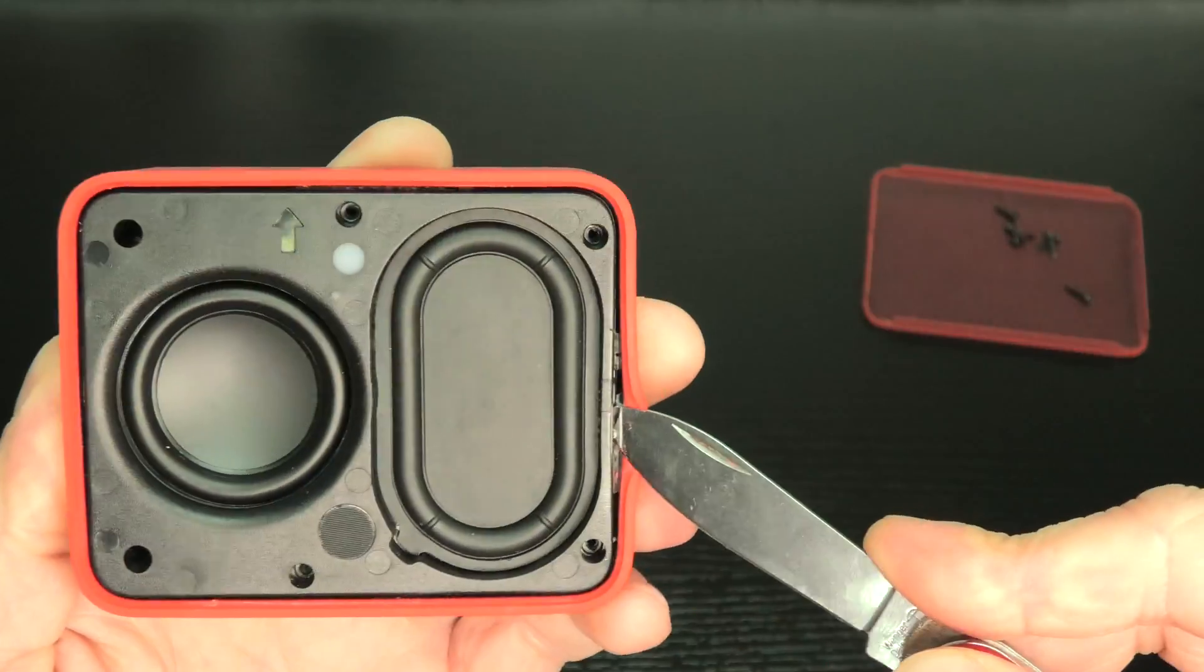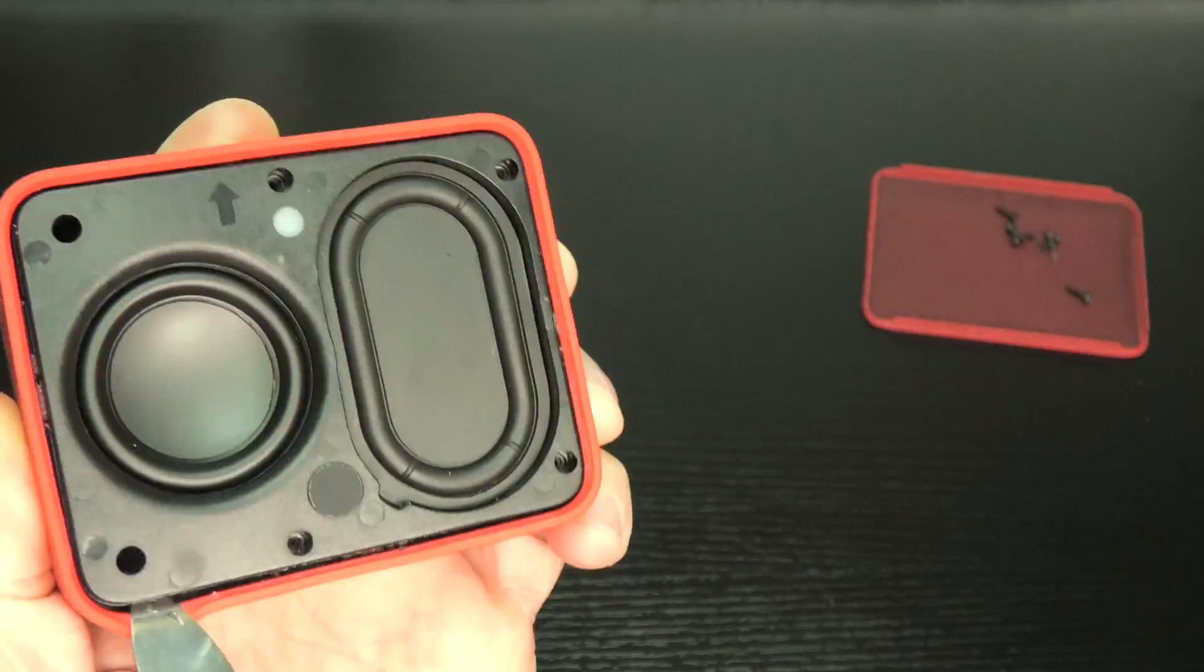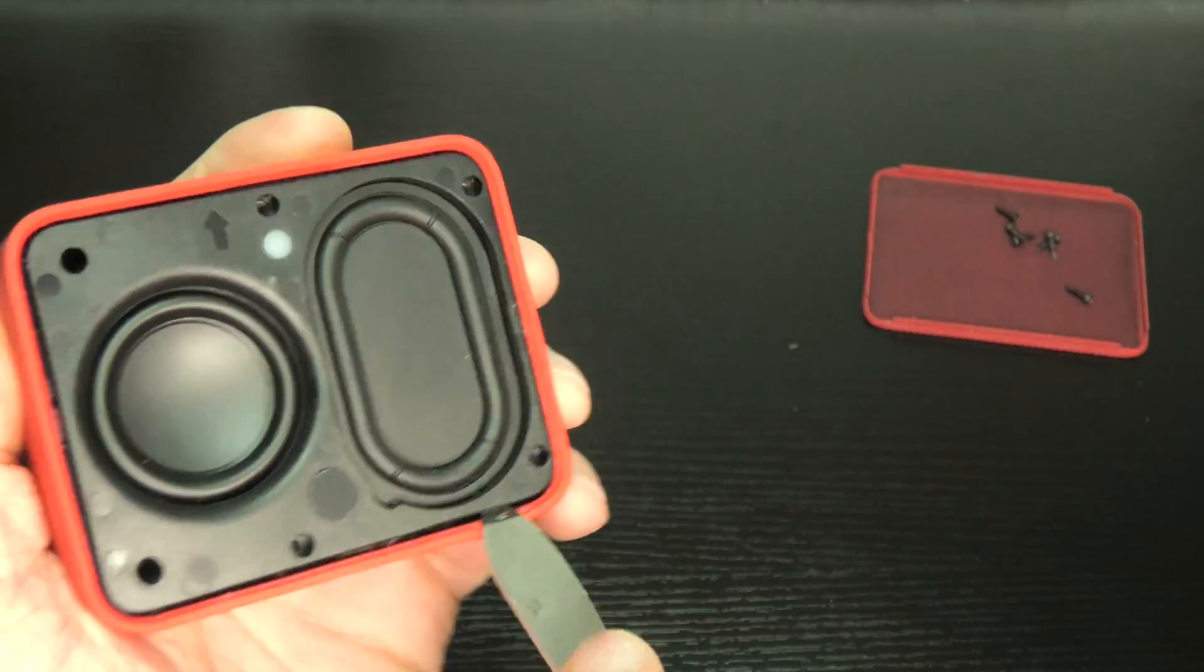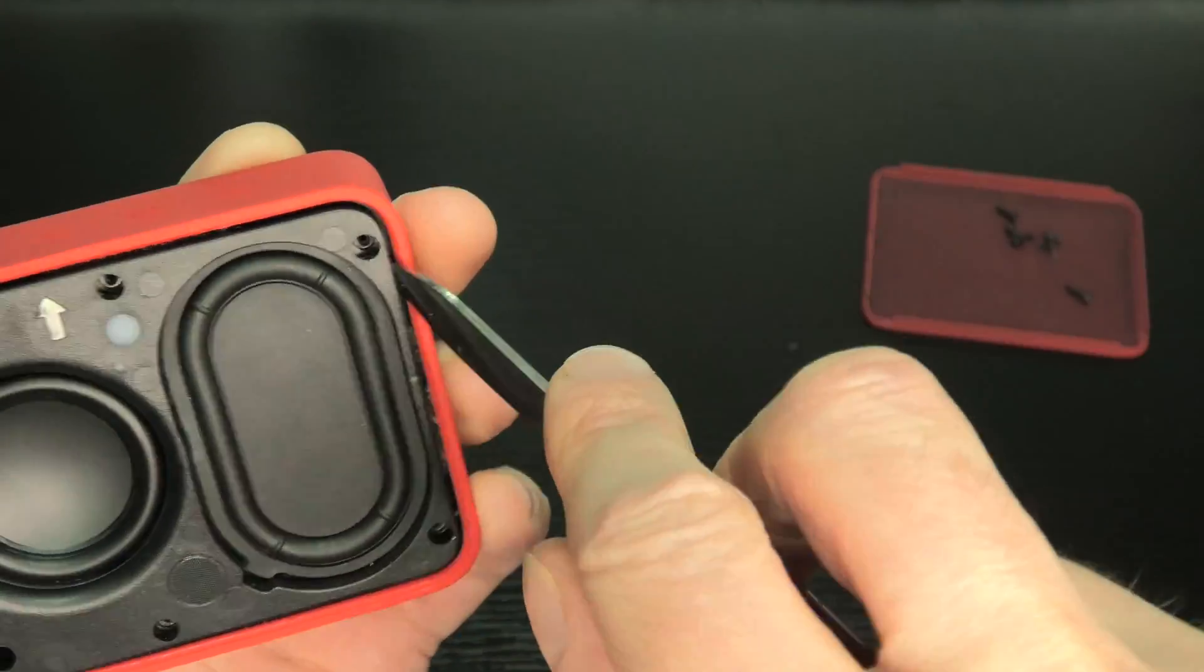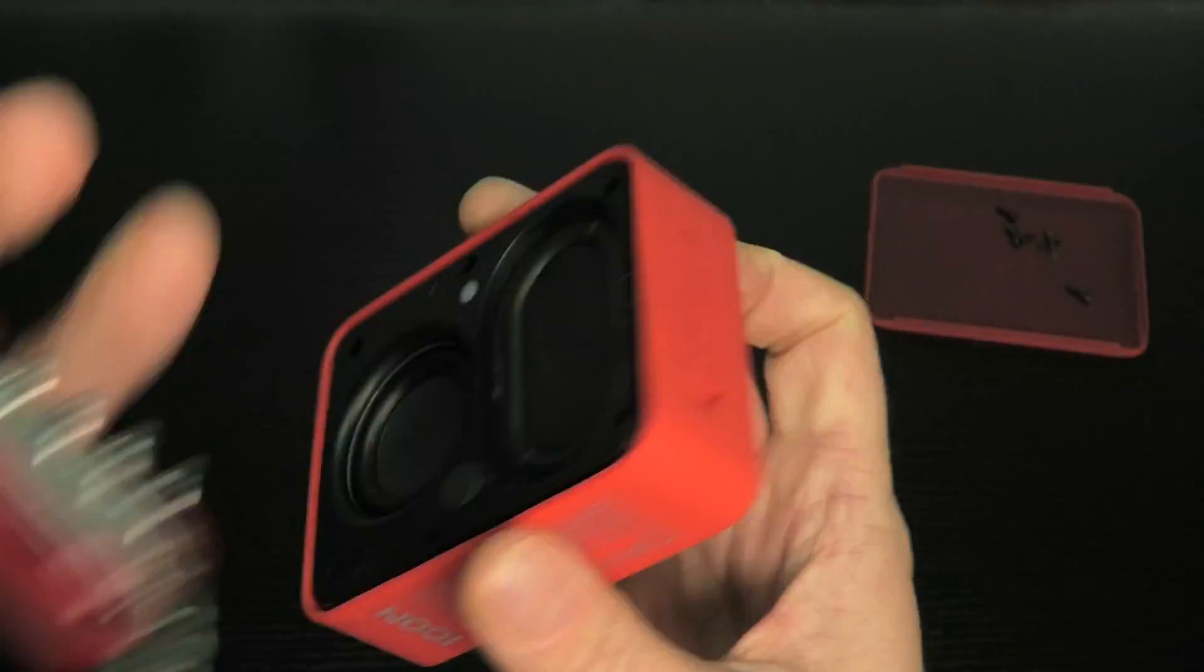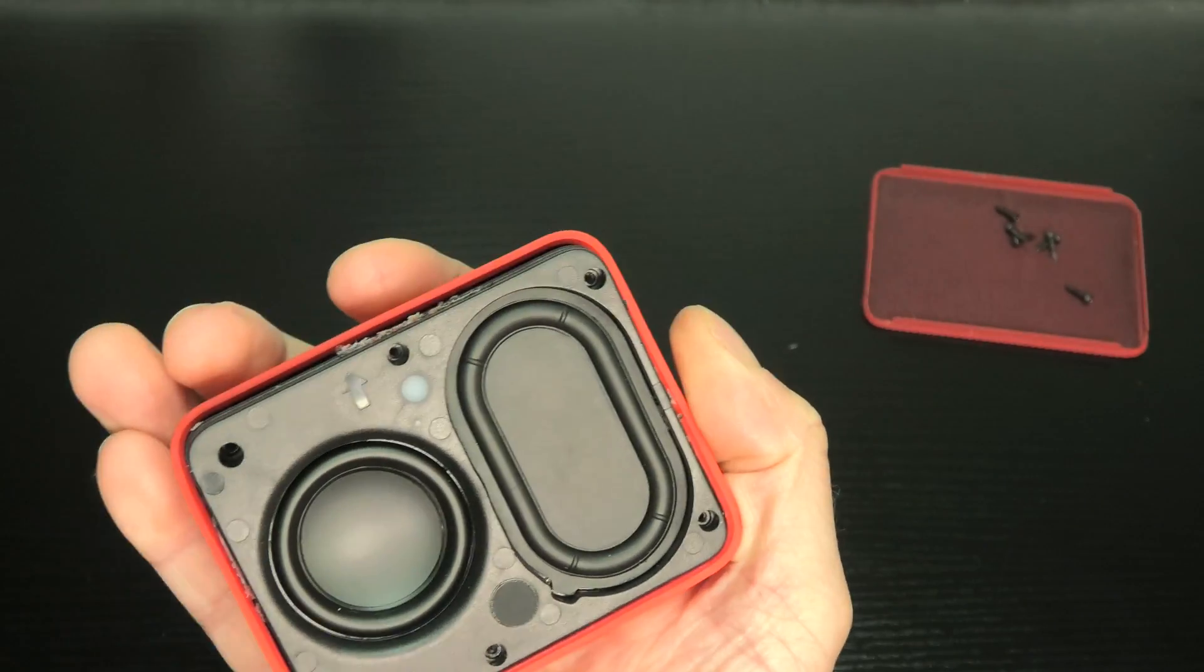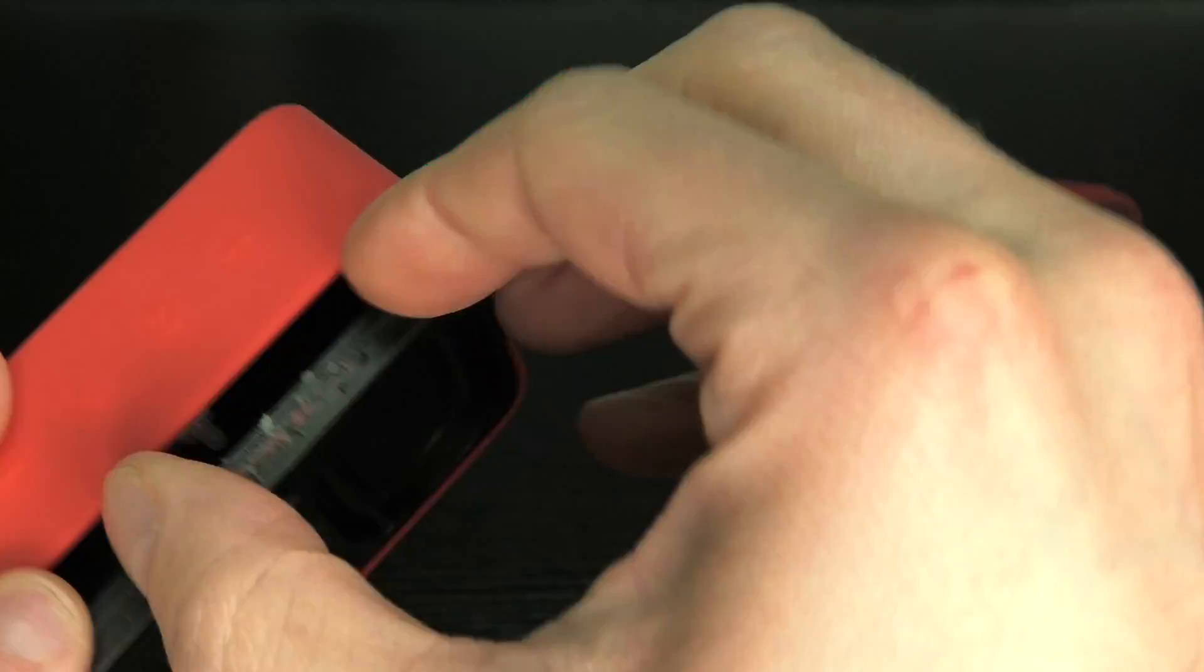And then to get this cover off here we use this pocket knife again. And the cover here is actually glued into place at four locations, one on each side. Of course this speaker is IPX7 waterproof so I guess this is a way that they help to secure it.